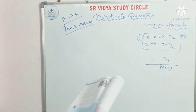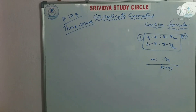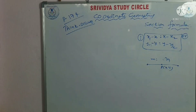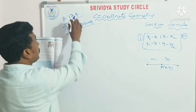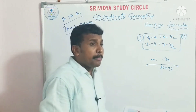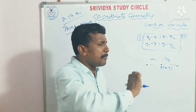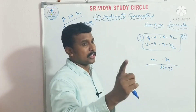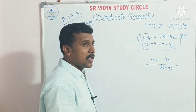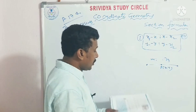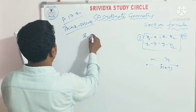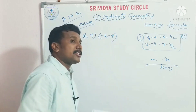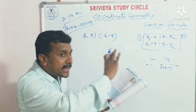Think and discuss — give it one minute. Think and discuss questions are on page number 174. We will do the complete concept from the textbook. The line joining the points — this is the first question.